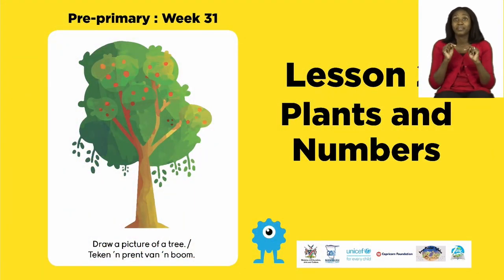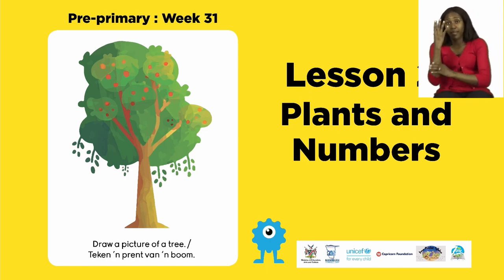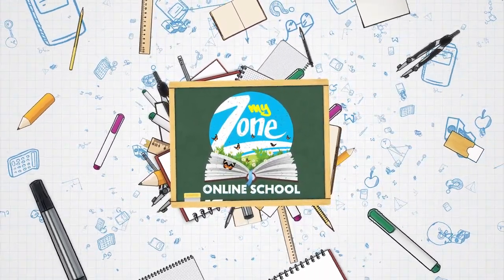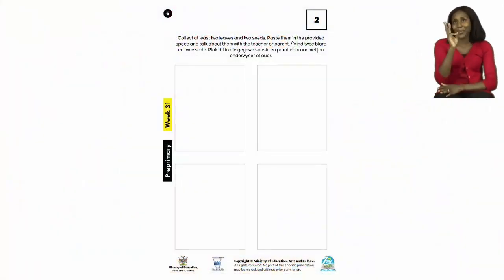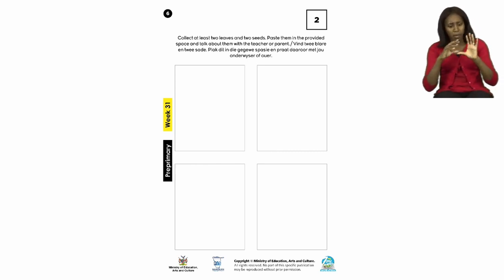For today's lesson we'll be talking about plants and numbers. For our lesson now boys and girls let's all turn to page 6. On page 6 we have a very fun activity. It's going to be our job to collect at least two leaves and two seeds. After we collect our leaves and seeds, we need to paste them in the spaces provided. And then we can talk about them with our teacher or our parents. Now let's take a look at what I have found so that you can go ahead and find yours as well.